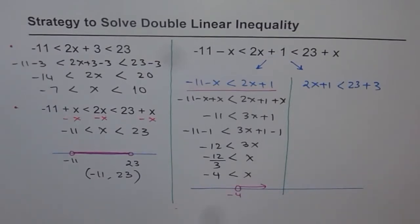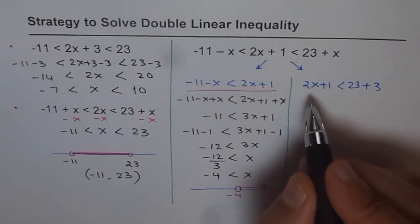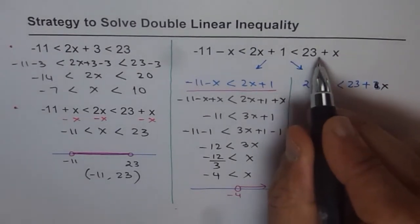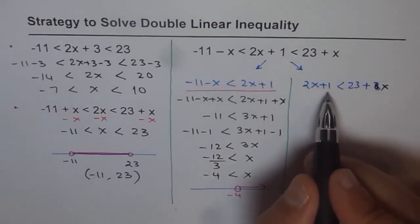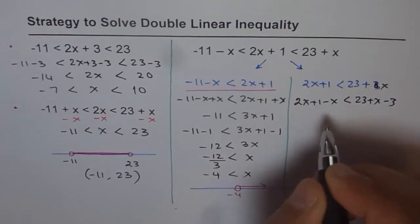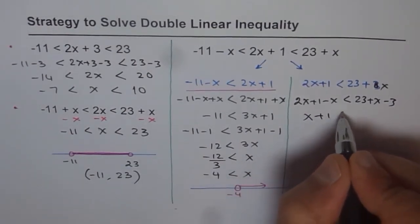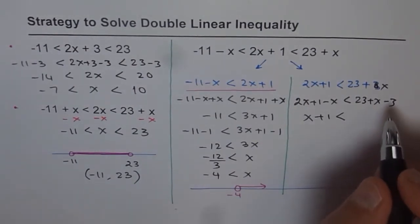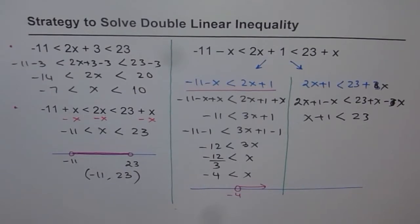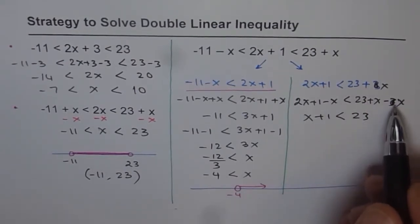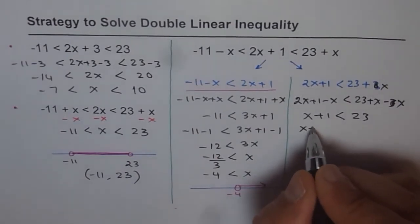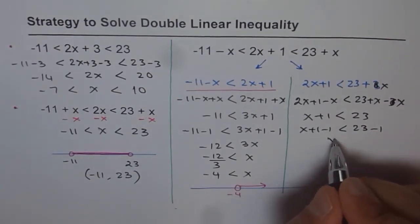Now solving Part B: 2x plus 1 is less than 23 plus x. We subtract x from both sides: 2x minus x plus 1 is less than 23, giving x plus 1 is less than 23. Subtracting 1 from both sides: x is less than 22. So the solution from Part B is x is less than 22, which on the number line extends to the left from 22.